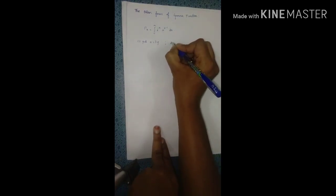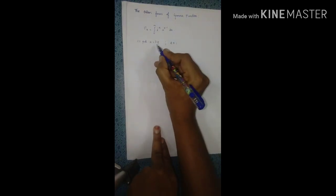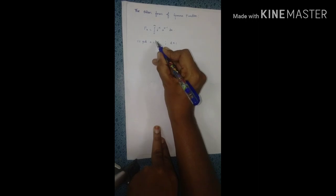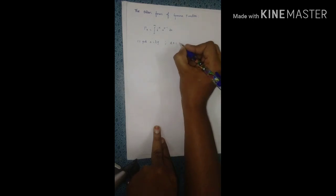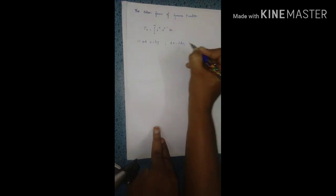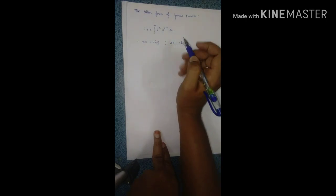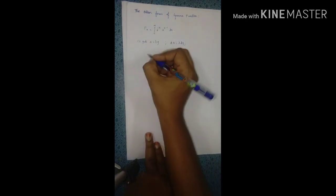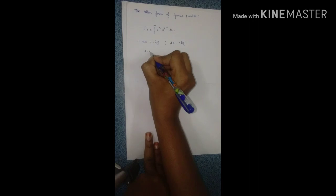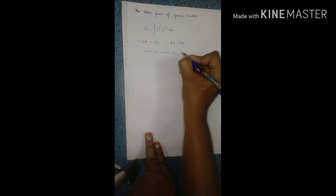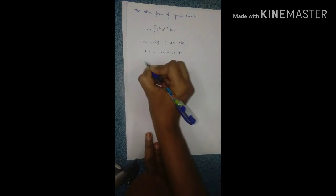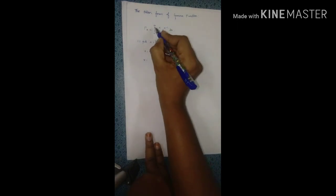Now, if we differentiate, dx equals lambda dy. So the limits will also change: when x equals 0, lambda y equals 0, which gives y equals 0. Next, when x equals infinity, infinity equals lambda y, which again gives y equals infinity. So the limits remain 0 to infinity.